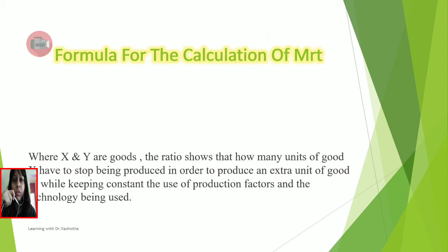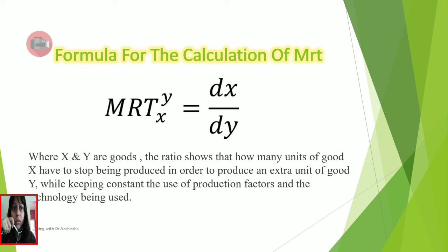Now the formula part. Here you can see the formula which is in the form of a derivative. X and Y are the two goods. MRT shows the ratio of how many units of good X have to be stopped from being produced in order to produce an extra unit of good Y, where we keep the use of production factors and technology constant. This is how it can be calculated.